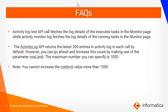Here are a few FAQs I would like to highlight. The activity log REST API call fetches the log entries of executed tasks in the monitor page. If you are looking to retrieve entries of a running task, you will need to use the activity monitor resource instead of the activity log resource. The activity log API returns the latest 200 entries by default. However, you have the option to increase this count by using the row limit parameter. The maximum number you can specify for row limit is 1000.